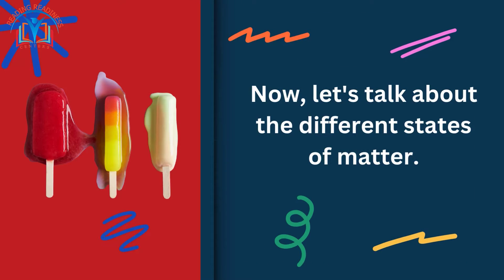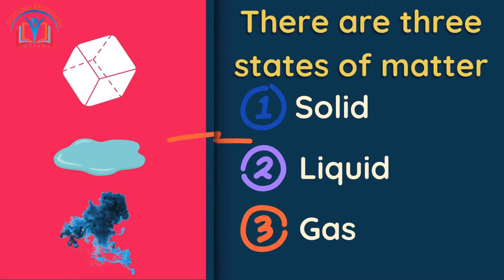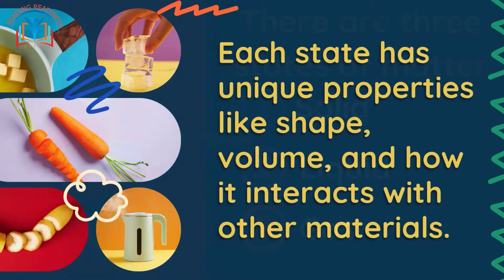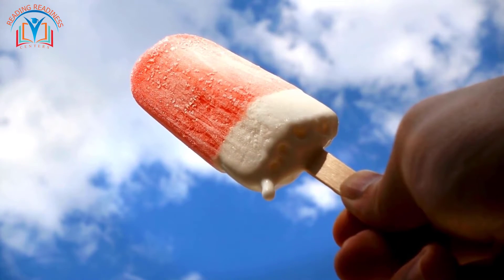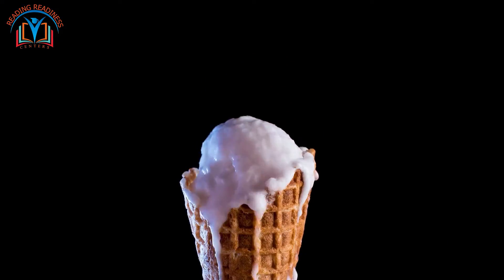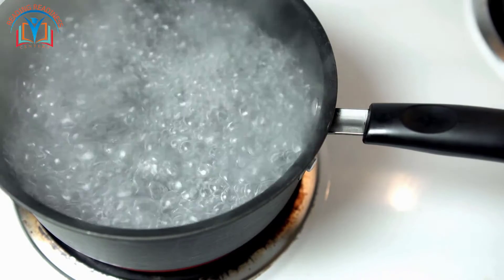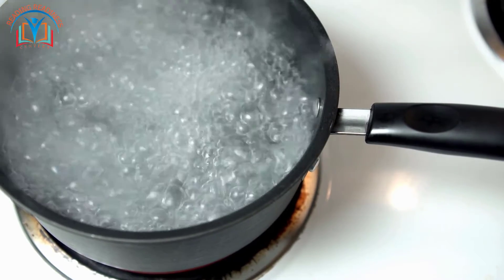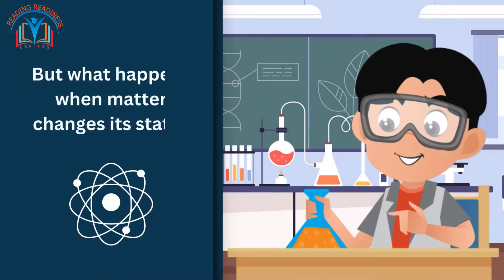Now let's talk about the different states of matter. There are three states of matter: solid, liquid, and gas. Each state has unique properties like shape, volume, and how it interacts with other materials. Imagine ice cream turning from solid to liquid on a hot day — that's melting. Solids turn into liquids when they get hot, and liquids can turn into gases when they get even hotter, like when water boils to create steam.